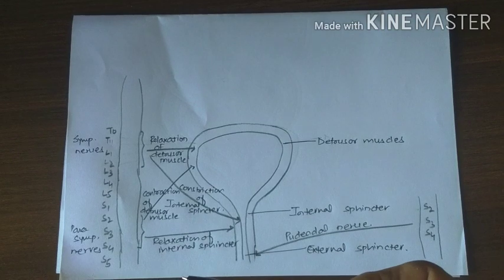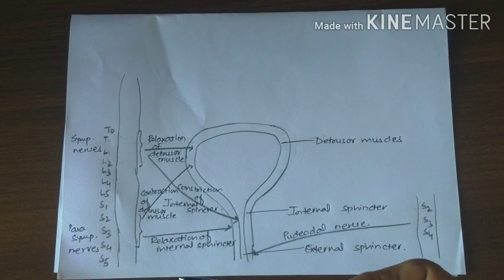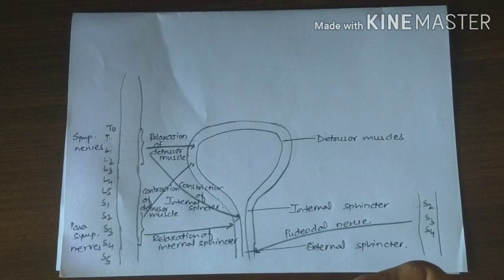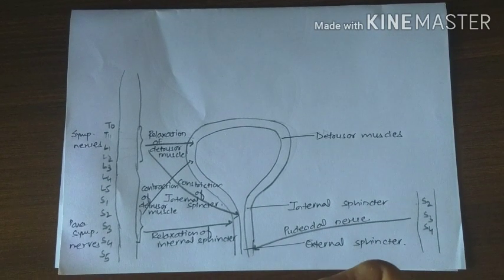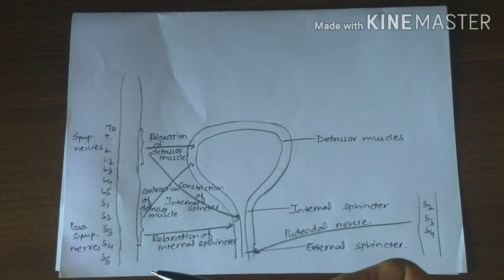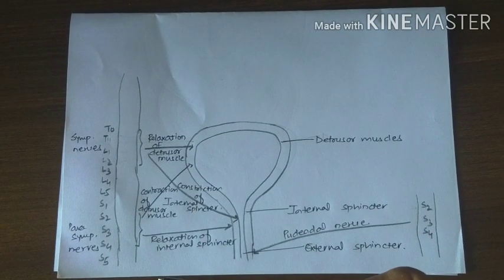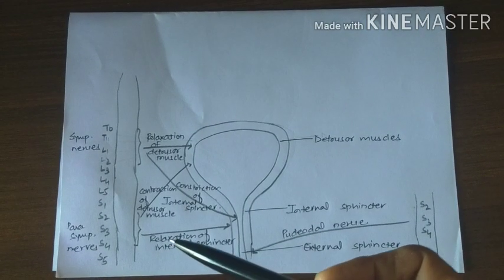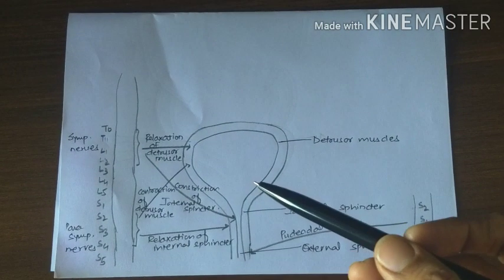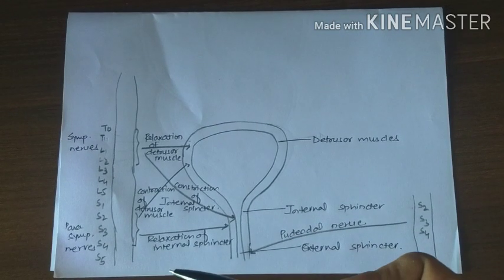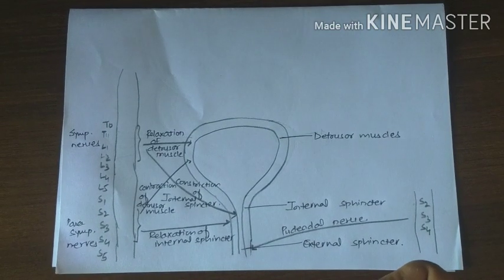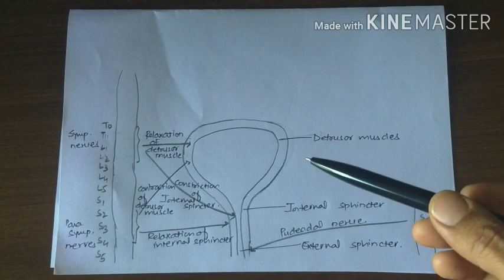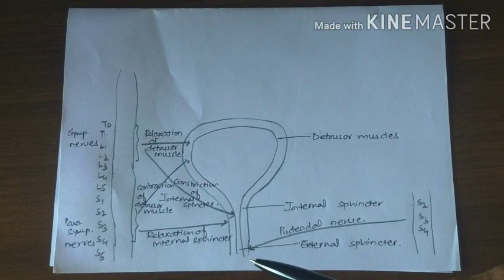Parasympathetic nerves are also known as pelvic nerves or nervi erigentes, and their function gives them the name nerve of emptying. They arise from S2, S3, and S4 and terminate in the hypogastric ganglion, from which postganglionic fibers arise and supply the detrusor muscles and internal sphincter. Stimulation of parasympathetic nerves has effects opposite to sympathetic stimulation: it causes contraction of detrusor muscles and relaxation of the internal urethral sphincter, resulting in emptying of the bladder.